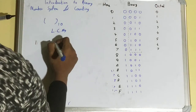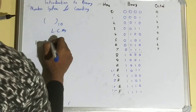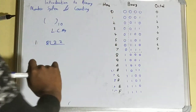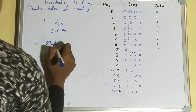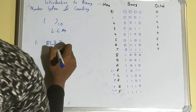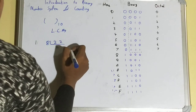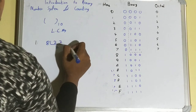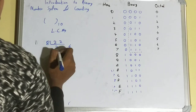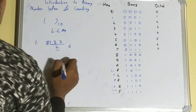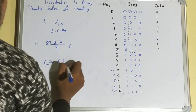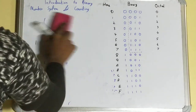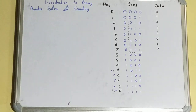Applying the same LCM method for octal: take decimal 22, divide by 8. 22 ÷ 8 = 2 remainder 6. So the octal representation is 26₈. The LCM method is simple and applies the same way for binary, hexadecimal, and octal.